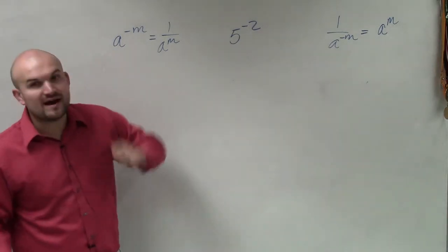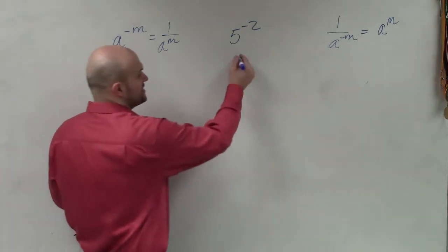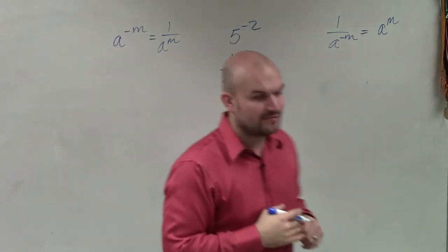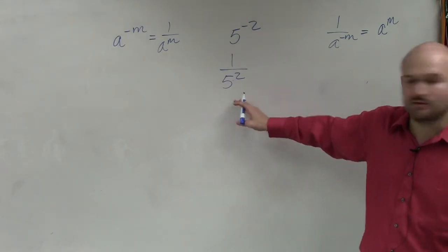So if I have 5 to the negative second, the first thing I want to do is rewrite this as a positive exponent, which will be 1 over 5 squared. And then I can evaluate 5 squared, which would be 25.